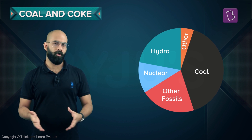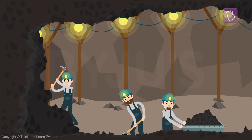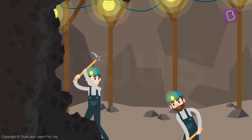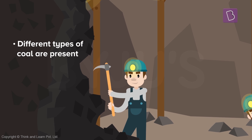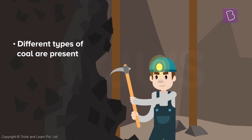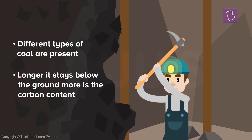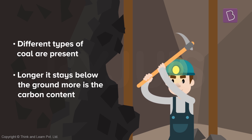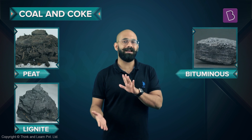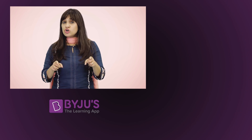You can imagine how important coal is. This coal is mined from deep under the ground, and there are different types of coal. The longer the matter stays in the ground, the more pure it gets — the carbon content increases. Based on its purity, coal is classified into four main types: peat, lignite, bituminous, and anthracite.